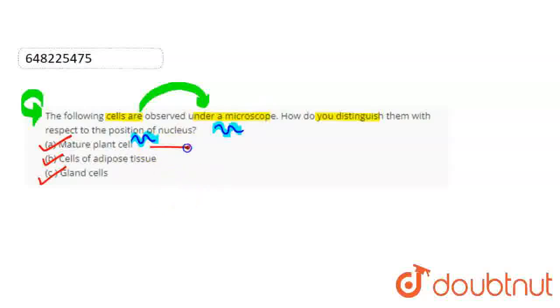First of all, if we talk about the mature plant cells, the nucleus is basically present at the periphery. This is because in animal cells, the nucleus is present in the center, but in plant cells the vacuole is present in the center.